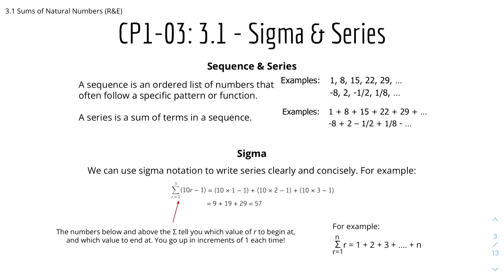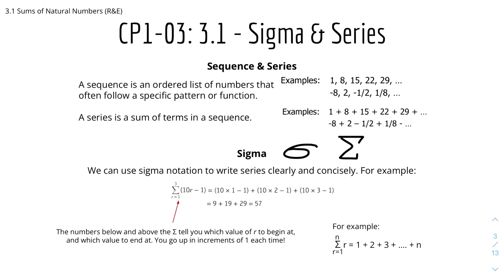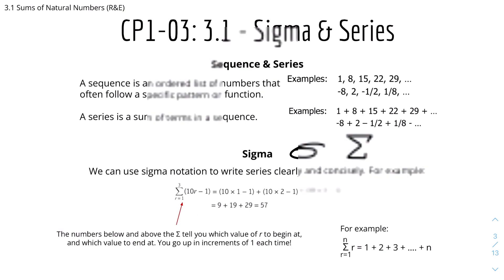Here we have sigma. We can use sigma notation to write series clearly and concisely. Sigma is basically the Greek letter sigma. Lowercase sigma is often used as standard deviation, which we'll look into later in further statistics. Capital sigma is used to represent sum — the addition sum. For example, the sum of 10r minus 1 from r equals 1 to r equals 3 is basically 10(1)−1 + 10(2)−1 + 10(3)−1, where r goes from 1 to 2 to 3.